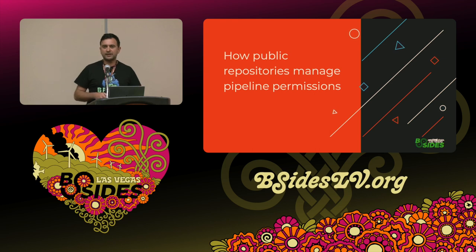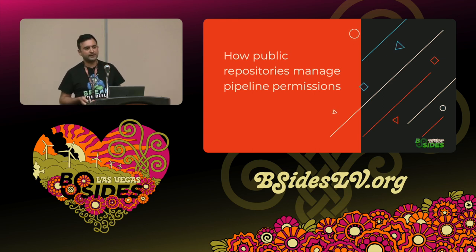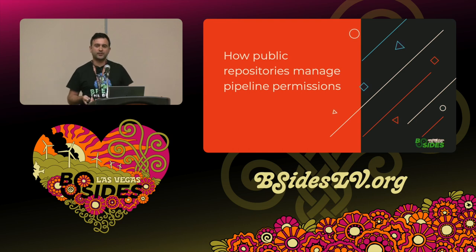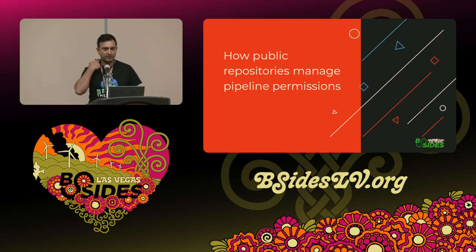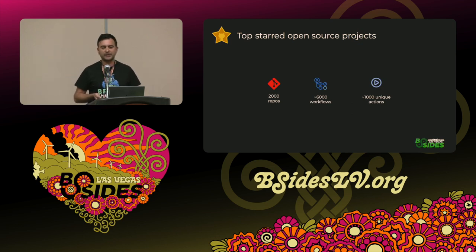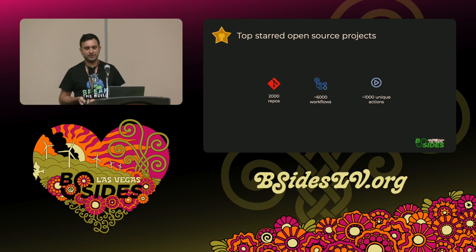After I wrote Piper, I decided I wanted to see how major public open-source projects are handling permissions in GitHub. So I took the top 2,000 repos, which had 6,000 workflows and 1,000 unique actions from the top-starred open-source GitHub projects. All the big names are here, as we'll see in a moment, and I wanted to see exactly how they manage permissions.